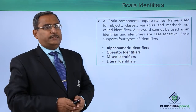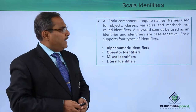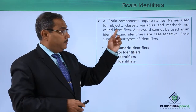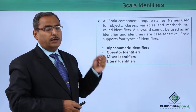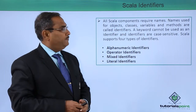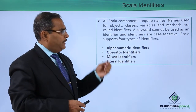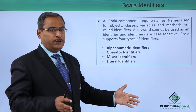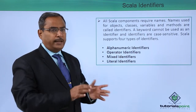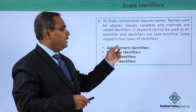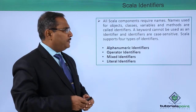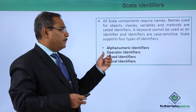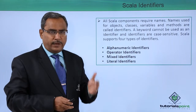All Scala components require names, and names used for objects, classes, variables, and methods are called identifiers. A keyword cannot be used as an identifier because we have a set of keywords in Scala that cannot be used as identifiers, and identifiers are case sensitive. Scala supports four types of identifiers.